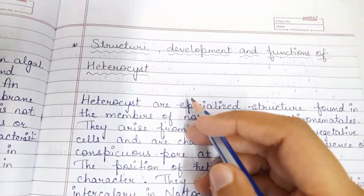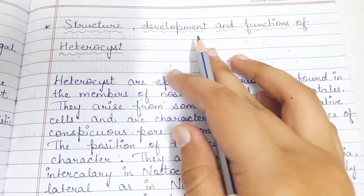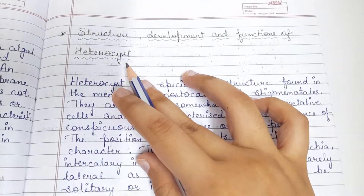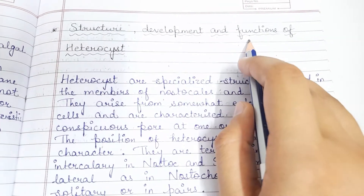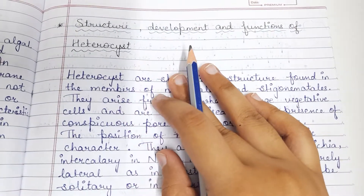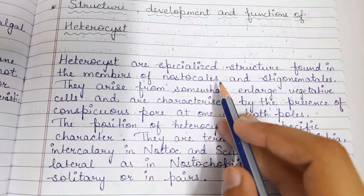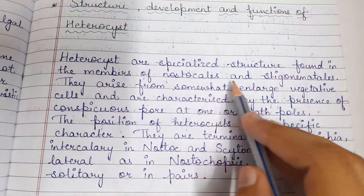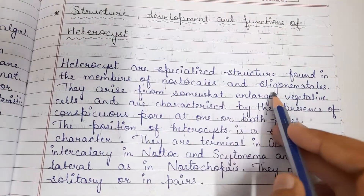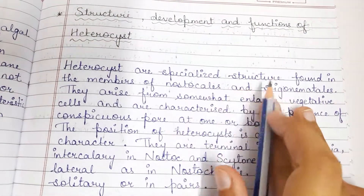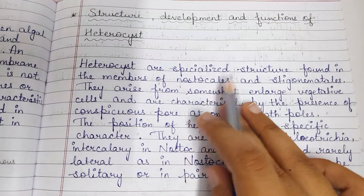Hello friends, welcome back to my channel. Today in this video I'll explain the structure, development, and functions of the heterocyst. Heterocysts are specialized structures found in the members of Nostocales and Stigonematales, which are two orders of the Cyanophyceae class.